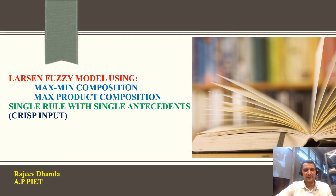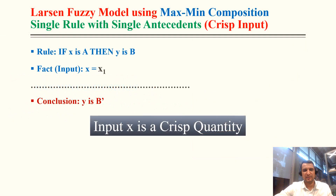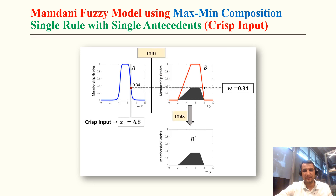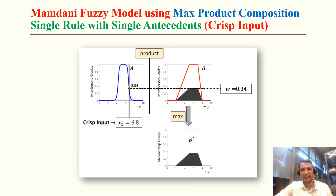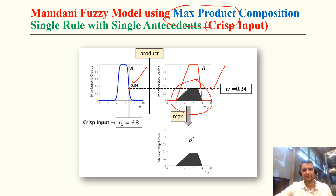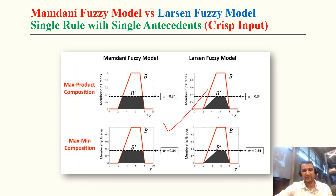For single rule with single antecedent with crisp input: the degree of compatibility equals 0.34. We scale down the output to 0.34, maintaining the shape. For max-product, the degree of compatibility is again 0.34 and the output is scaled down by 0.34. The difference between max-mean and max-product is more easily seen with multiple rules and multiple antecedents.